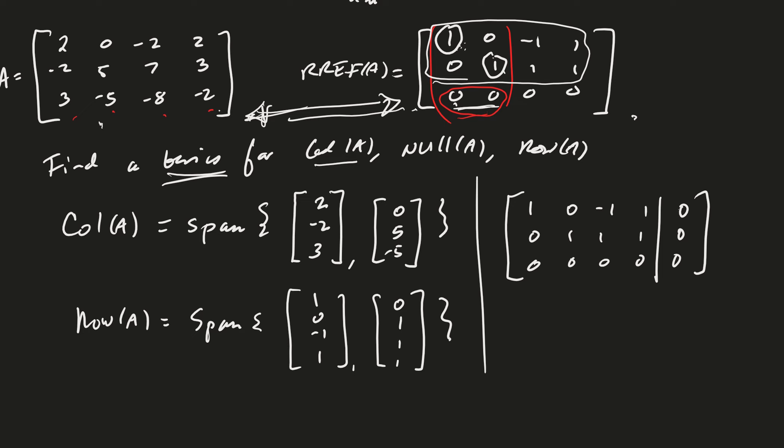For the basis for the row space of A, you use the actual rows from the RREF. They're displayed as columns here. Good.